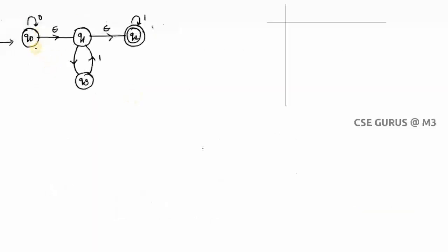In this example, from Q0 to Q1 you can move without taking any input — this is called an epsilon transition. Similarly, Q1 to Q2 also has an epsilon transition. So there are two epsilon transitions. In a finite automaton that has both regular inputs and epsilon transitions, we call it an NFA with epsilon moves.